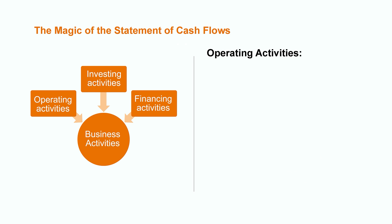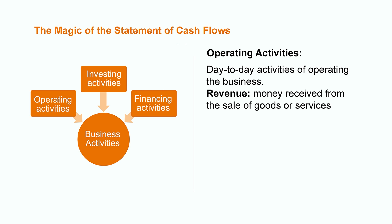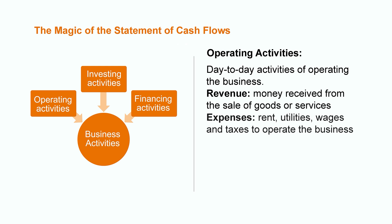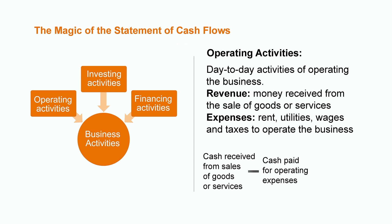Last, but certainly not least, are the operating activities. This is the category where all the day-to-day business transactions occur. This includes the revenue a company receives for selling a good or service, as well as all the expenses that the company incurs to operate the business, such as rent, utilities, wages, and taxes. On the statement of cash flows, we would see the total cash flow from operations reflected by the cash received from the sale of goods or services, less any cash paid out for operating expenses in that period.